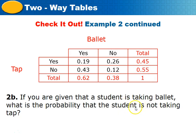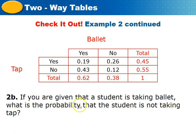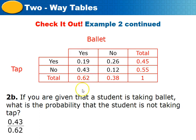Part B says: given that a student is taking ballet, what is the probability the student is not taking tap? The total taking ballet is our denominator. The proportion taking ballet but not tap is 0.43. So we compute 0.43 divided by 0.62, which gives 0.69, or 69%.